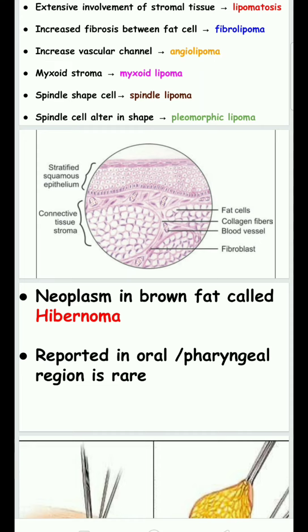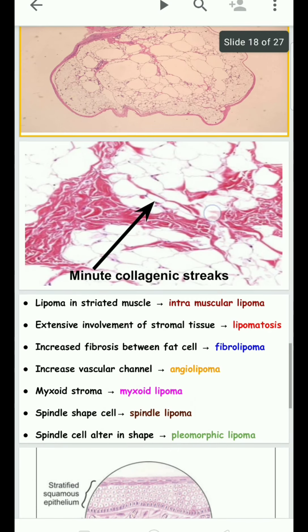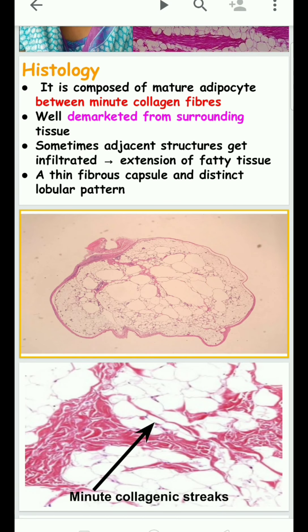Lipoma in brown fat is called hibernoma. Brown fat helps transfer energy and is rare in the oral or pharyngeal region. In treatment, simple excision is needed. Recurrence is absent except in infiltrating lipoma, where the adjacent structure gets infiltrated and the fatty tissue extends into surrounding areas.